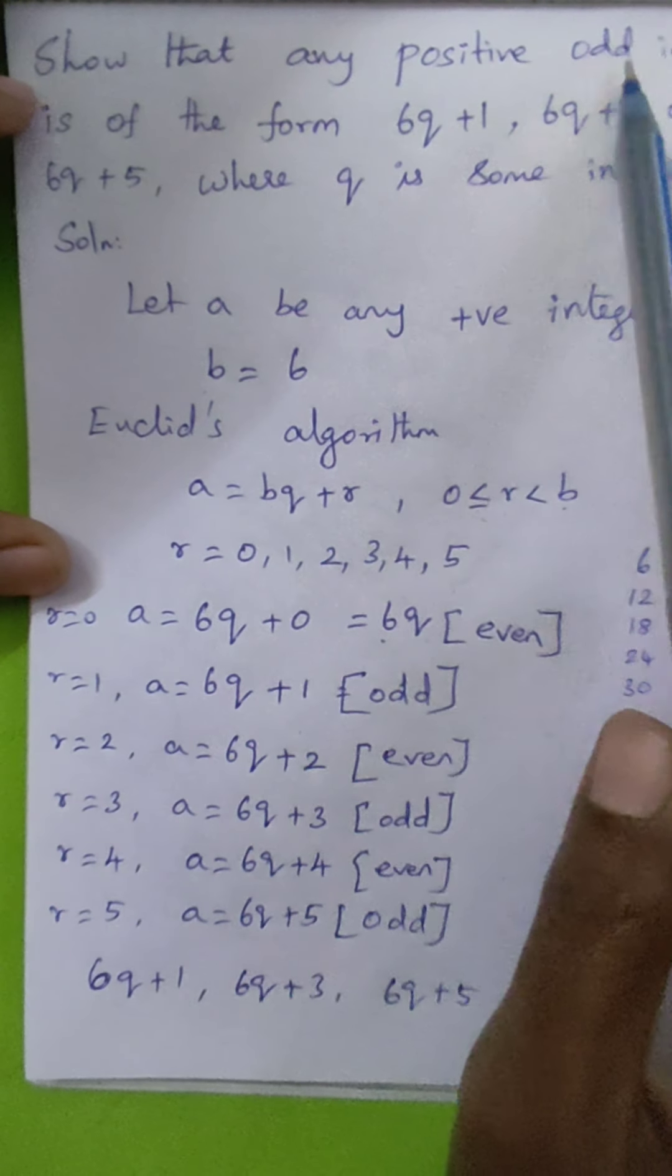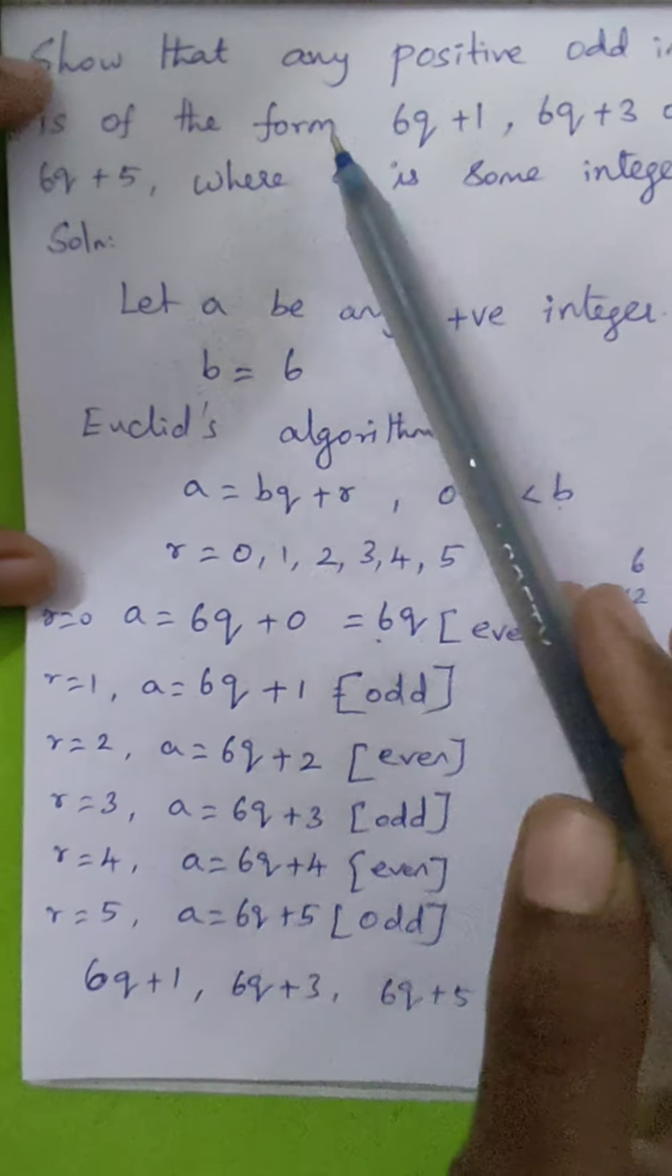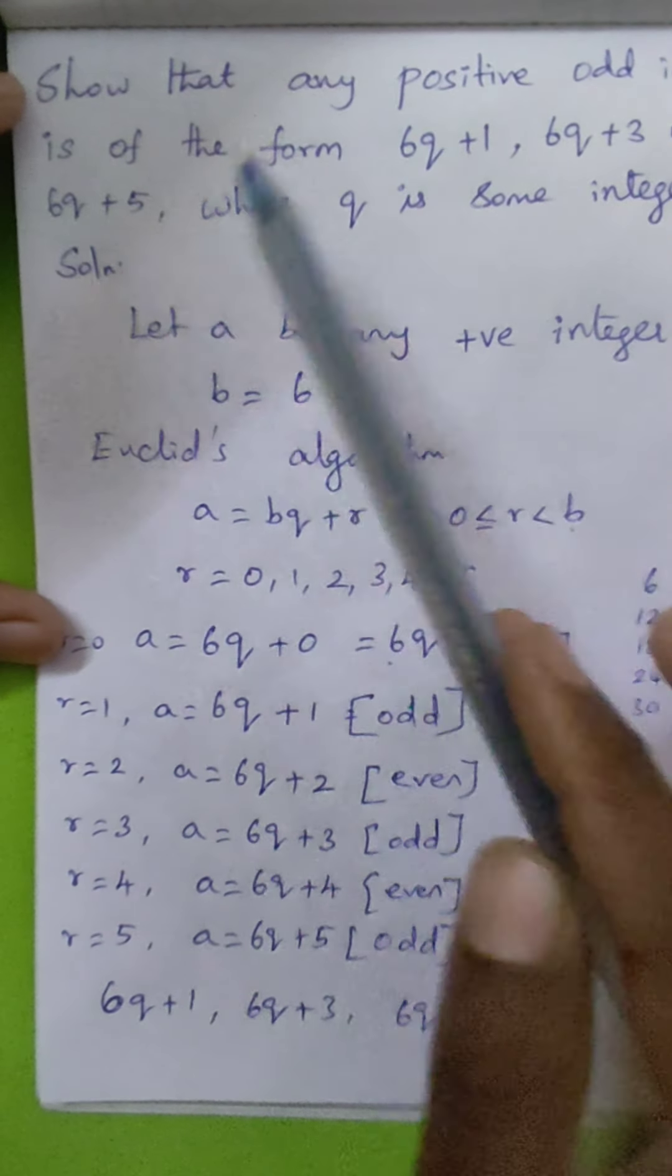Any positive odd integer is of the form 6q plus 1, 6q plus 3, or 6q plus 5.